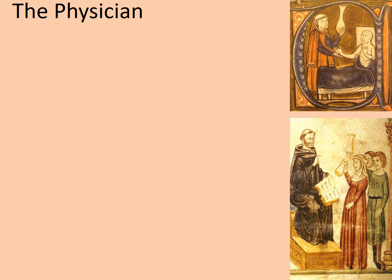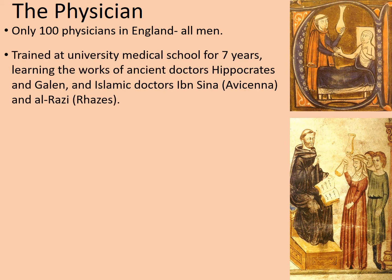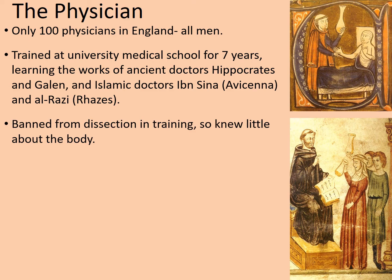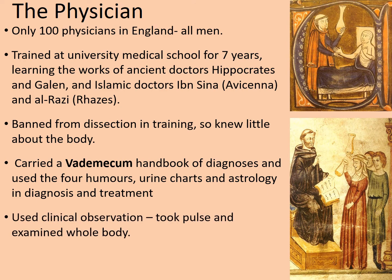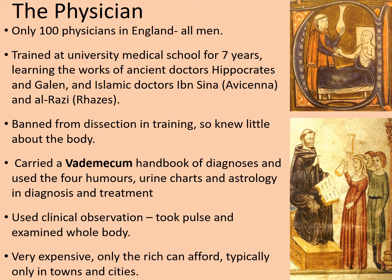Let's complete our first card on the physician. A physician is a medical doctor — someone we might more ordinarily call a doctor today. There were only around 100 physicians in all of England and all of them were men. They were trained at university medical school for seven years, learning the works of ancient doctors like Hippocrates and Galen, and the Islamic doctors Ibn Sina and Al-Razi, who they called Avicenna and Razi. They were banned from dissection in training, so they knew very little about the human body other than what they read in their textbooks. They carried something called the Vademecum — a handbook of diagnoses using the four humours, urine charts, and astrology. They used clinical observation, took the pulse, and examined the whole body. But they were very expensive — only the rich could afford them, and typically only in towns and cities.